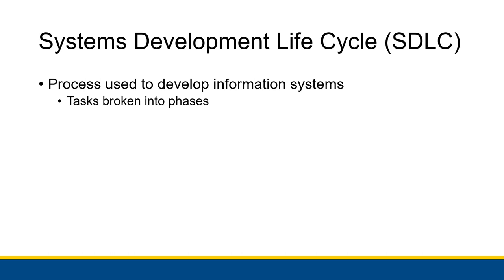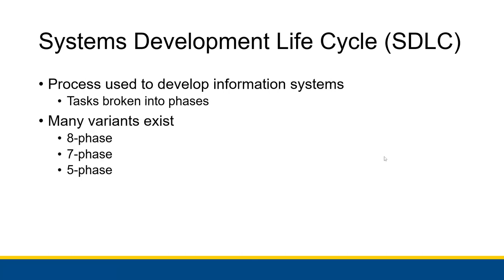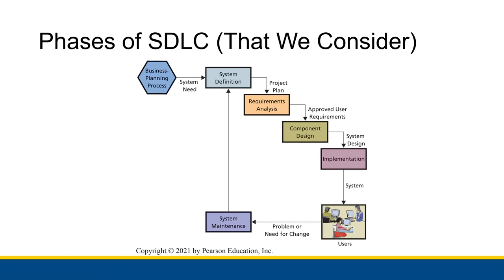The idea of the SDLC is to take all the tasks needed to complete an information system, break them into phases, and complete those phases one at a time. There are a lot of different variants of the systems development lifecycle — some break it into eight phases, some into seven, some into five. We are going to focus on one of the five-phase SDLCs in this chapter. Here's an overview of all the phases, and we'll go through each one of them one at a time throughout the rest of the videos.